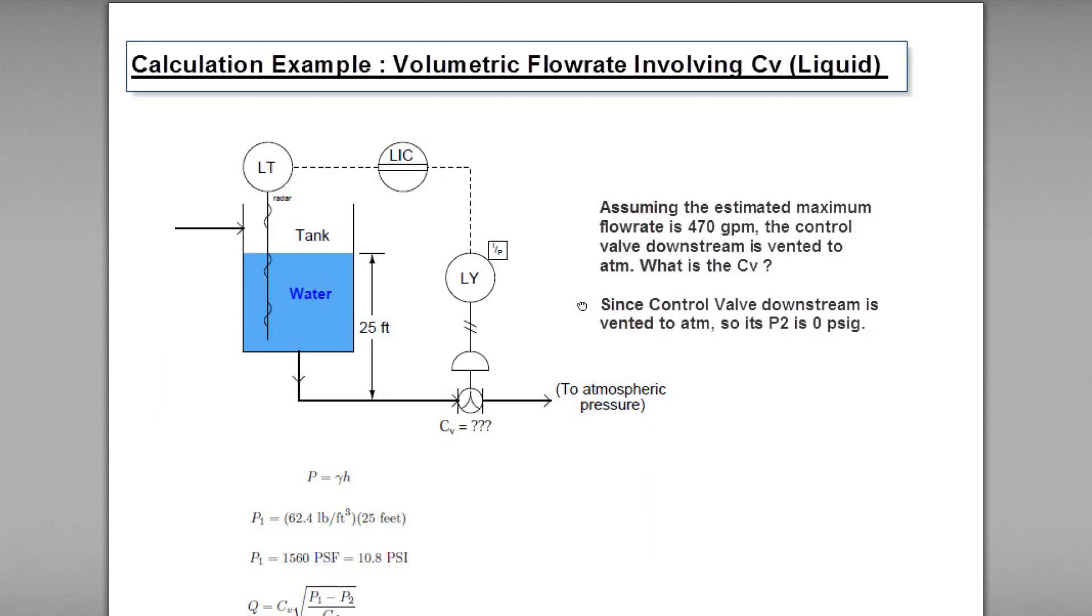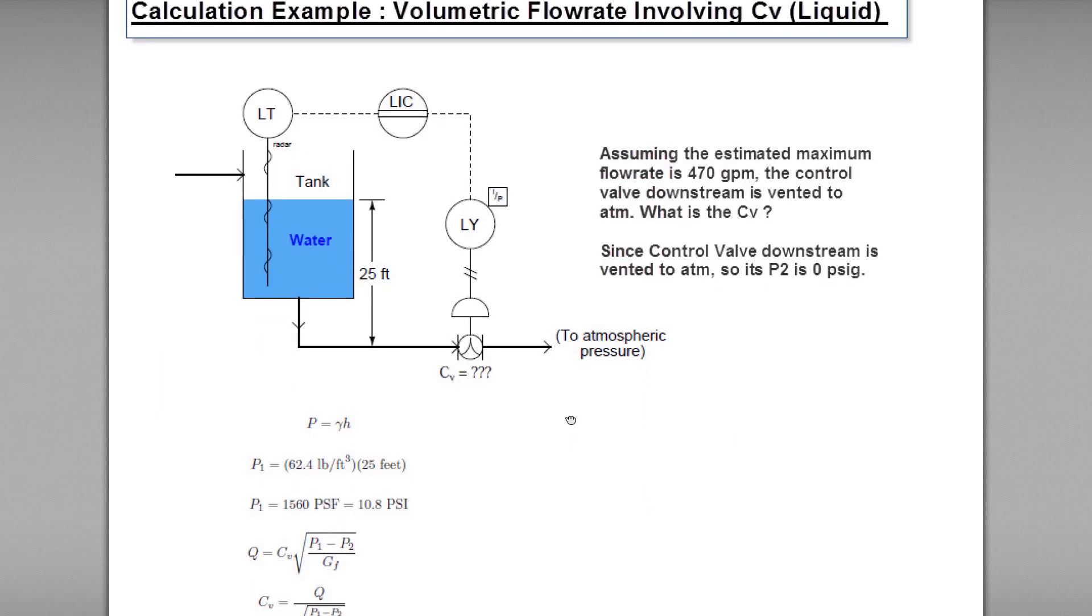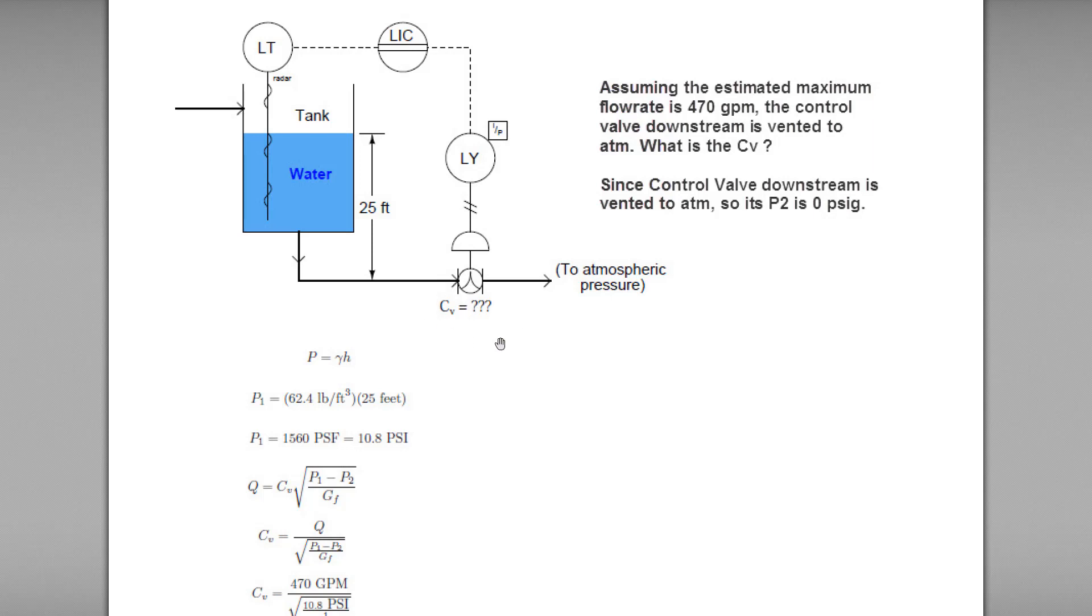So now we can come to the calculation part to calculate the CV or flow coefficient. Assuming that the estimated maximum flow rate of the liquid is 470 gallons per minute. The control valve downstream is vented to ATM, that means atmosphere. What is the CV? As we know, since the control valve downstream is vented to ATM or atmosphere, the downstream pressure P2 is 0 psi G. G mean gauge.